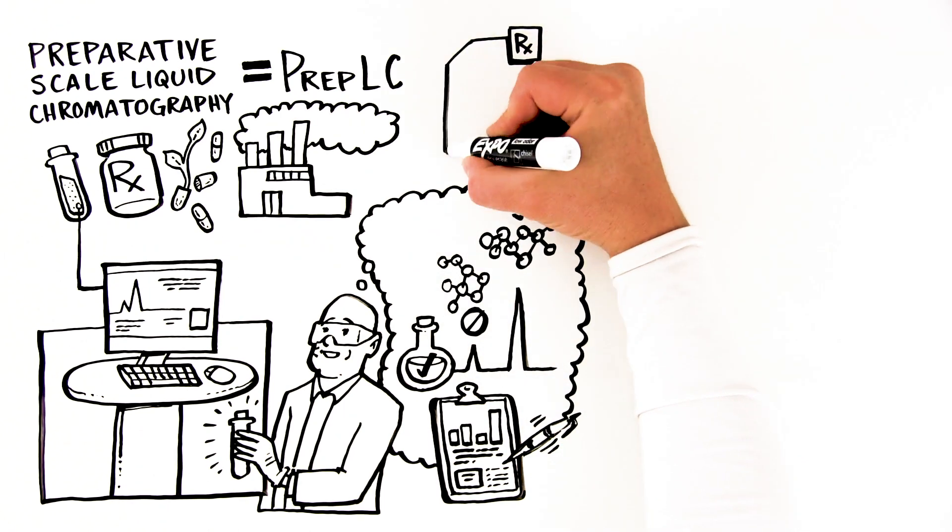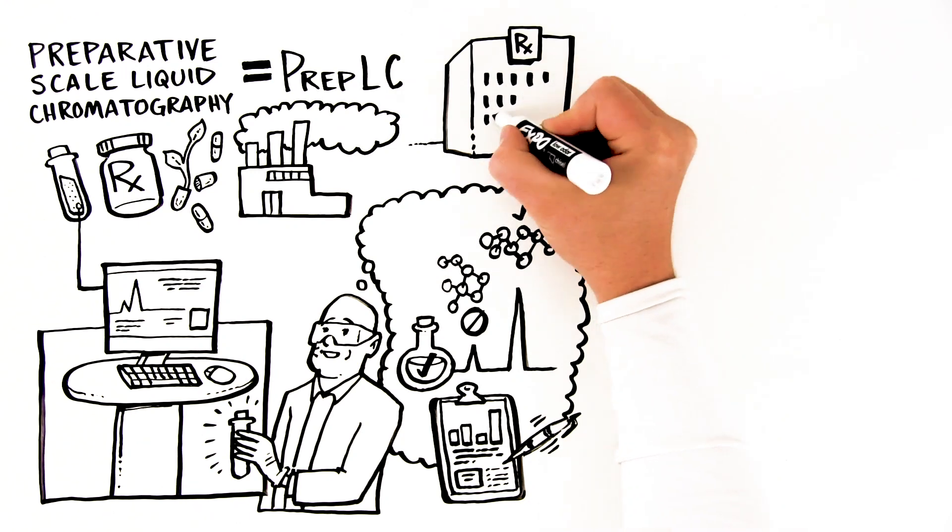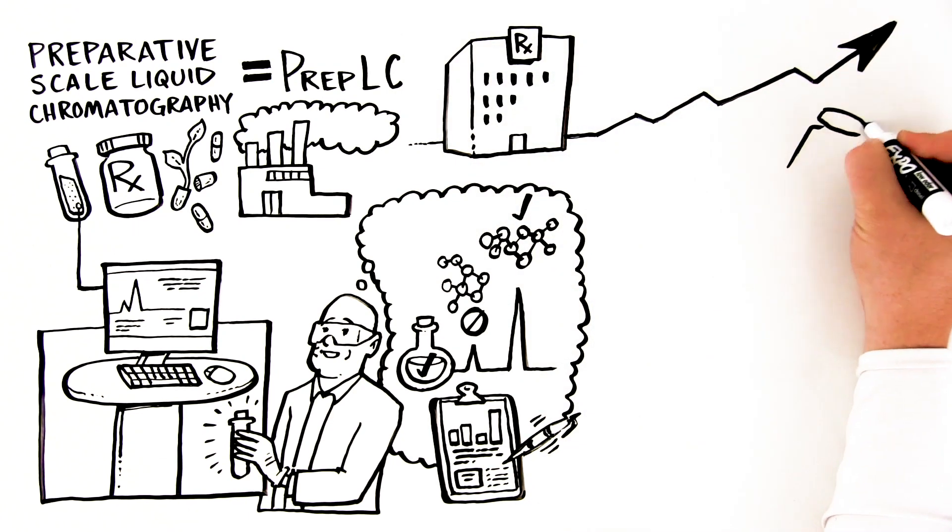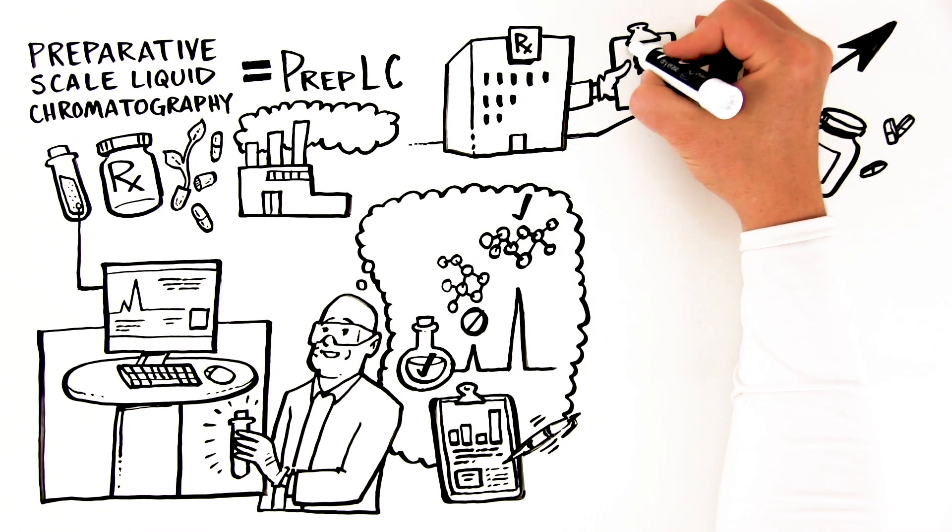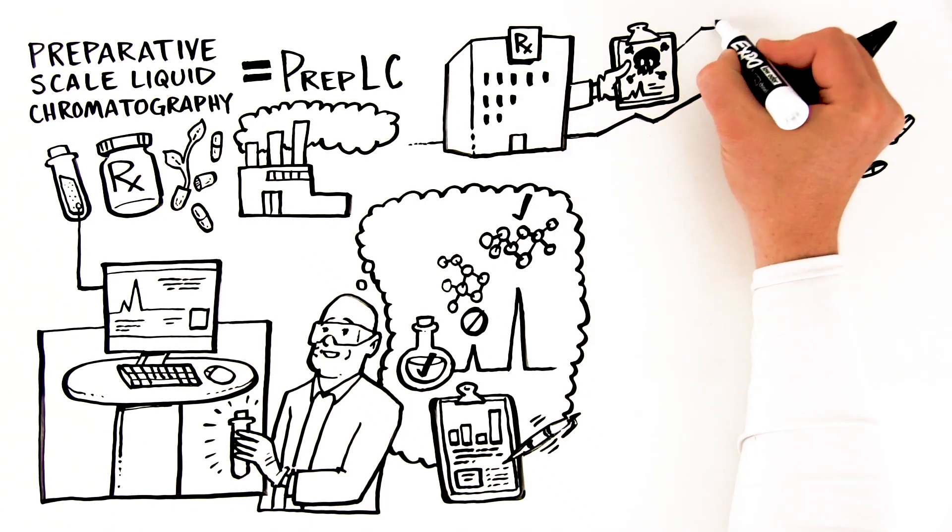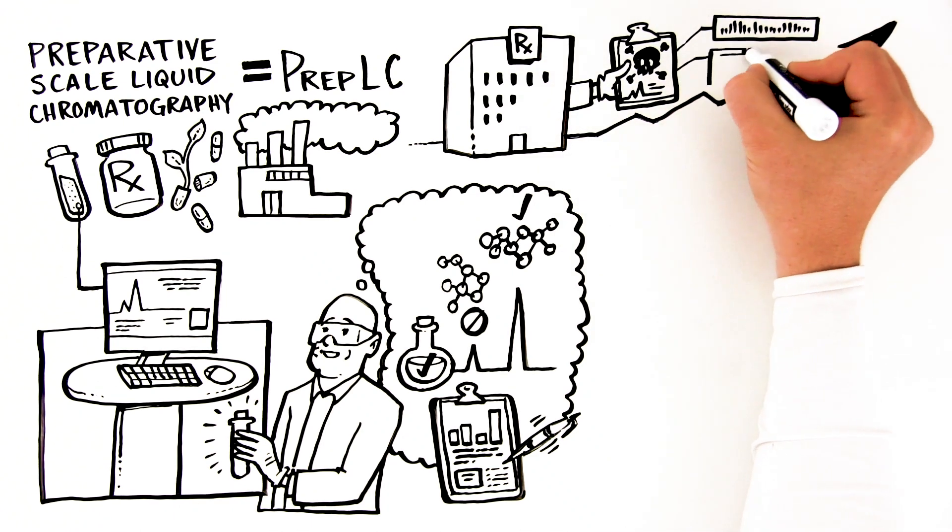For example, in the pharmaceutical industry, where production or synthesis of a drug target needs to be scaled up as it moves along the development pipeline, quantities up to the gram scale are needed to perform further drug development studies.